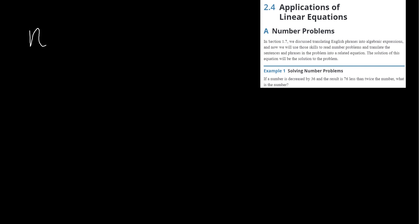We will use n to be our unknown. This sentence reads: if a number is decreased by 36 — so a number decreased by 36 — and the result, which is going to be equal to, 76 less than twice the number. So it's going to be 76 less than twice the number. Now we just have to solve: n minus 36 equals 2n minus 76.